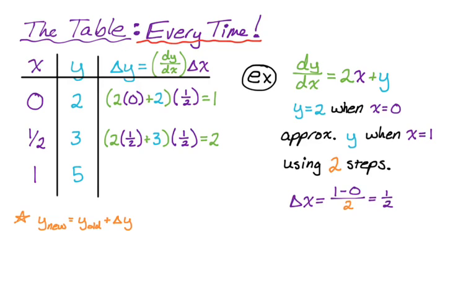But then if this is a free response question, you want to be careful with how you write your answer. So what I'm going to say is, when x is equal to 1, y is approximately 5. So approximately is a big deal, because we didn't find the exact value. In fact, we kind of know we're wrong, because we're just using tangent lines over and over. But we're less wrong than if we used one tangent line to go all the way across the distance.